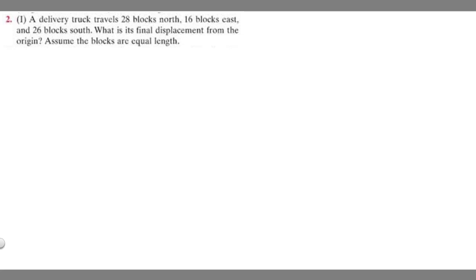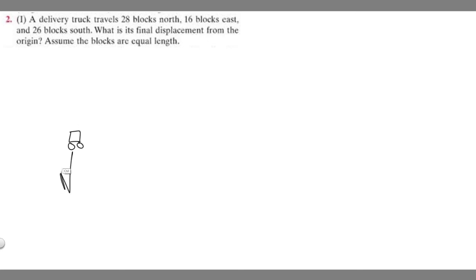Let's draw a diagram of what's going on here. We have this car and we know it's going to travel 28 blocks north. So this direction is going to be north, east, south, west. It's going to go 28 blocks in this direction — I'm just going to label blocks as B. So this is going to be 28B.